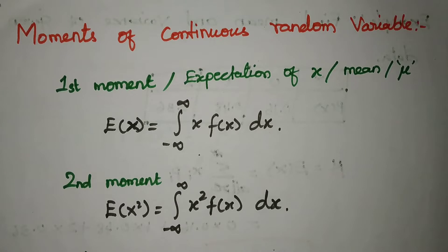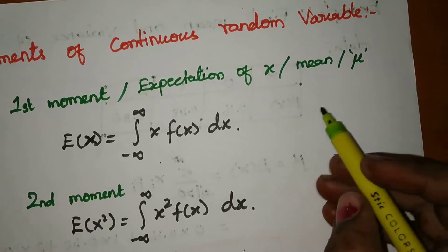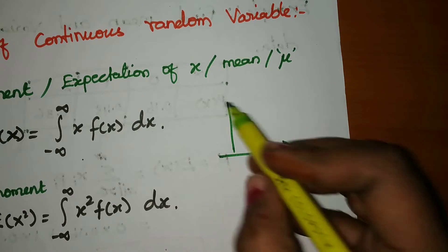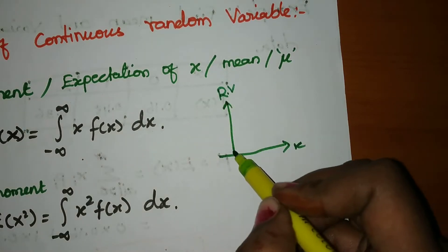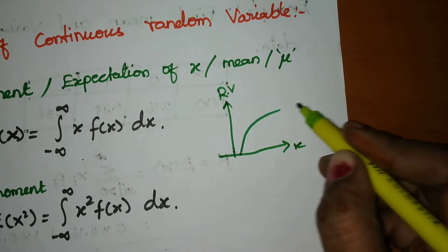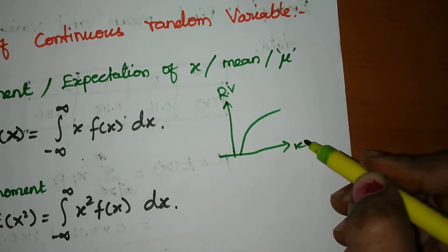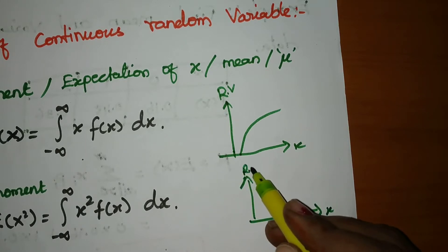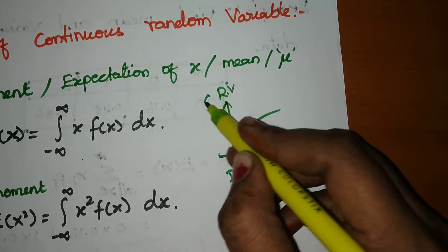What is the continuous random variable has already been explained. A variable's value is x, and it will be in a range. If you see the continuous random variable graph, you can see it. Let's see the x and random variable. You can see the random variable value — this is discrete, this is random variable, this is discrete, this is continuous.